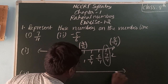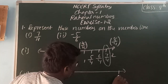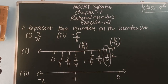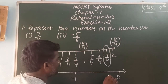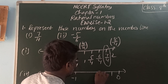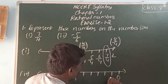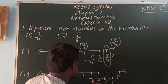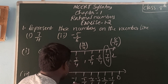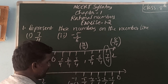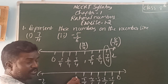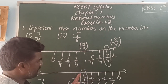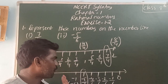On the number line, we mark 0, minus 1, and minus 2. From 0 to minus 1, we divide into 6 equal parts: minus 1 by 6, minus 2 by 6, minus 3 by 6, minus 4 by 6, minus 5 by 6, minus 6 by 6 — which equals minus 1. They are asking us to represent minus 5 by 6, and this fraction lies within just one unit interval.